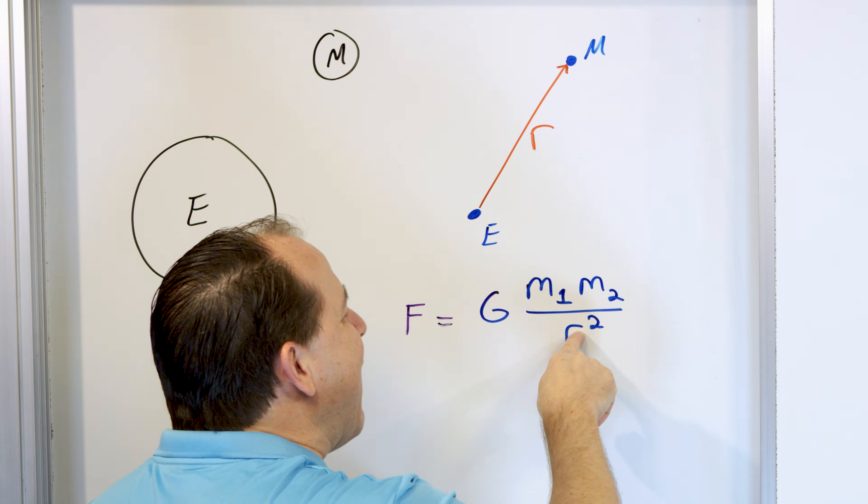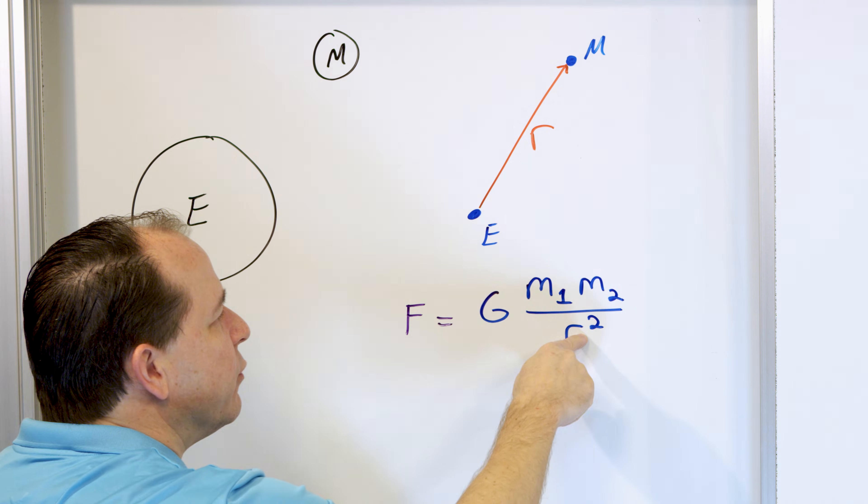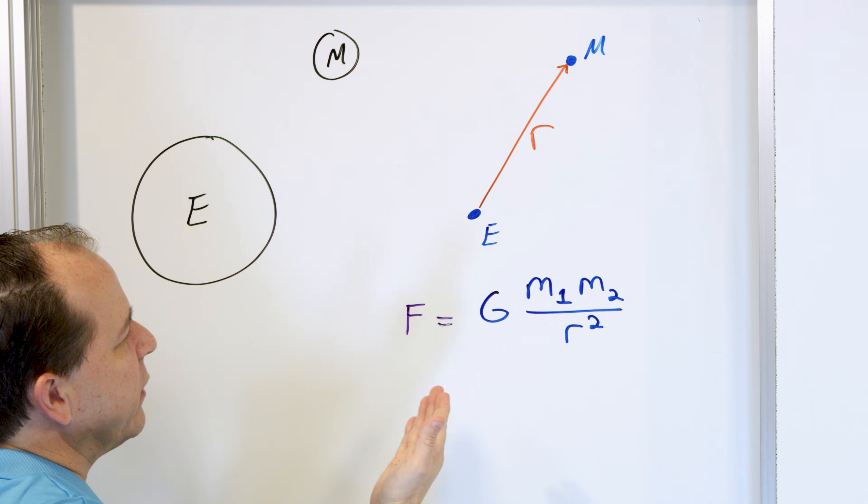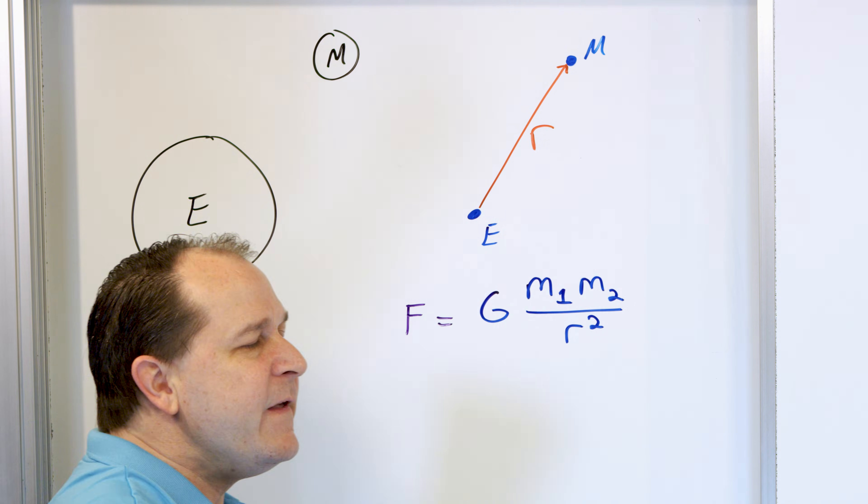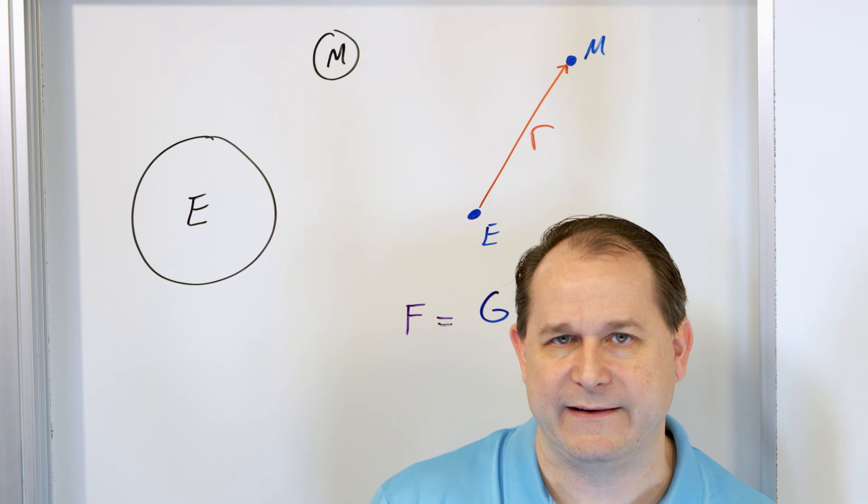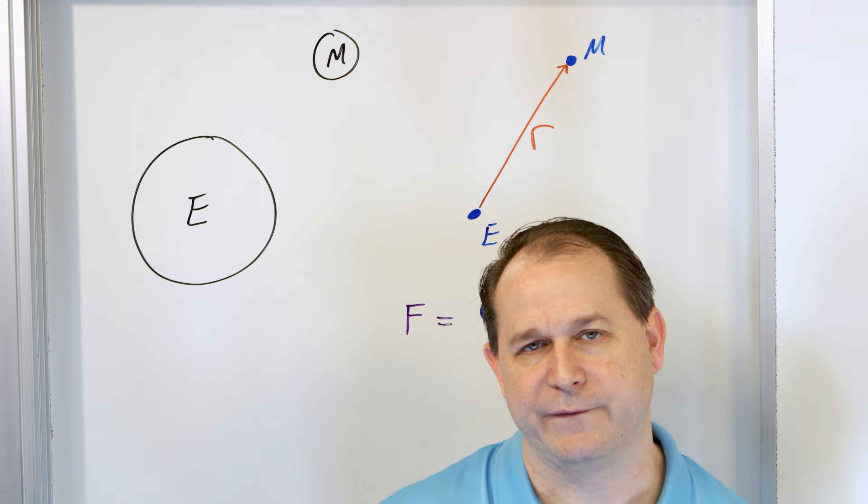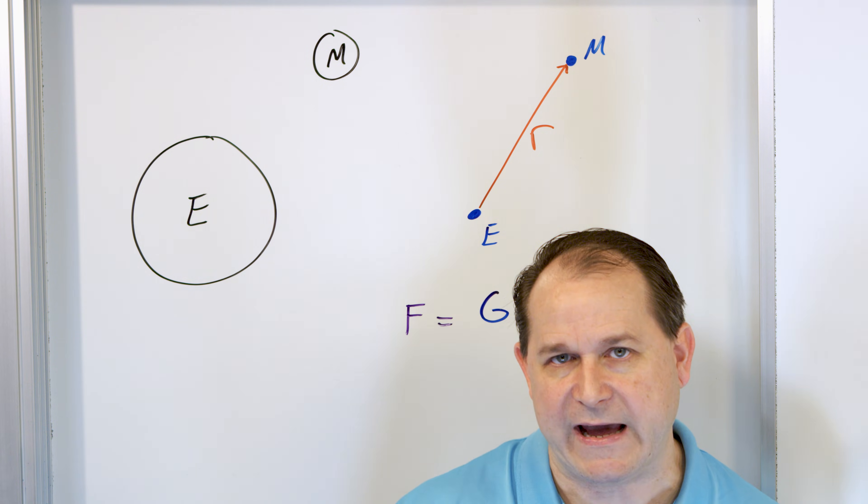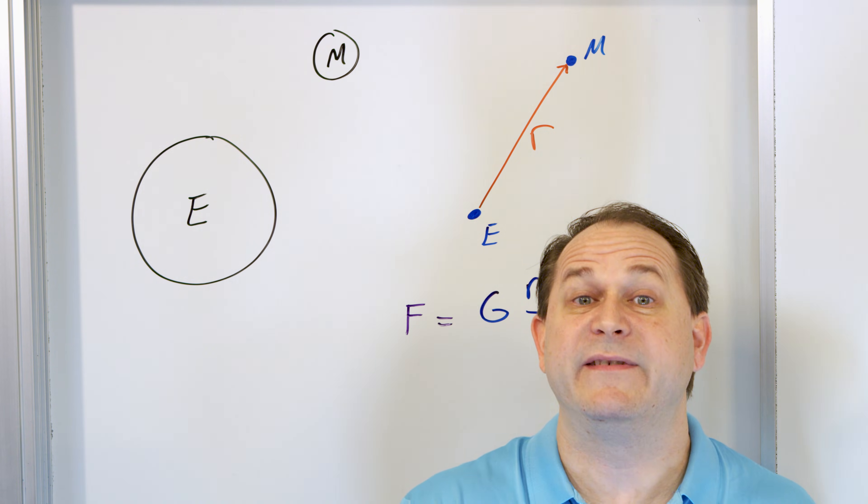then no matter how far away I put these objects, this radius or this distance is still going to be a number, we're dividing by it. So the force between any two bodies in the solar system is always positive. There's always a gravitational force.